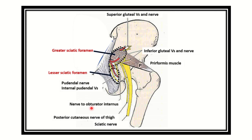In this picture, this portion is the lesser sciatic foramen and this is the greater sciatic foramen. We can see that some structures pass through the greater sciatic foramen and then re-enter through the lesser sciatic foramen. We have to find out the name of this structure.